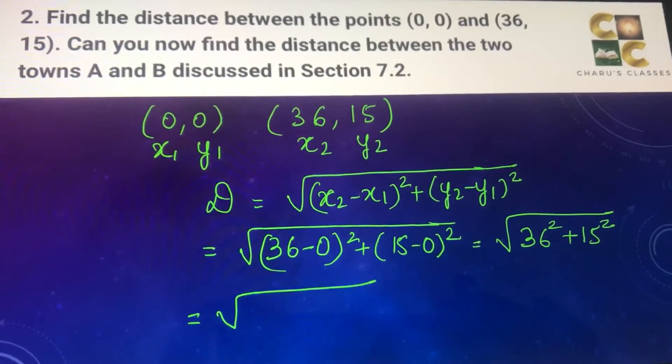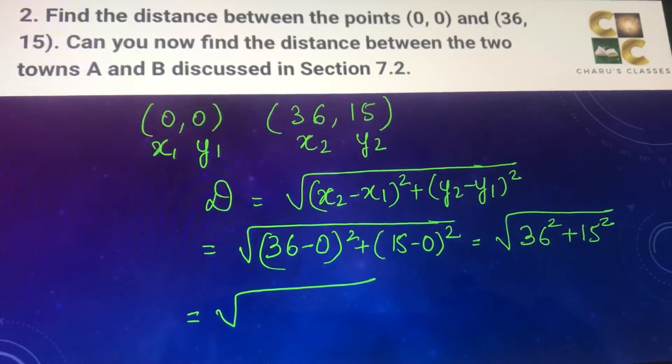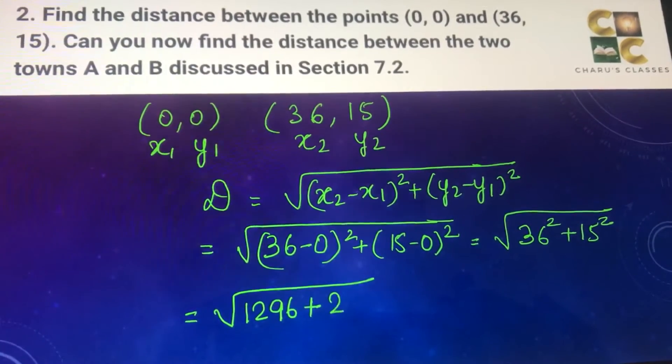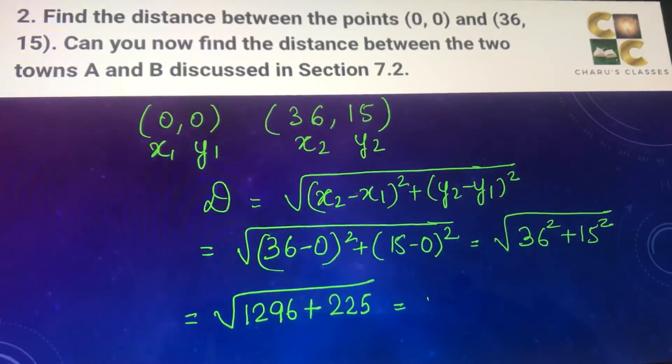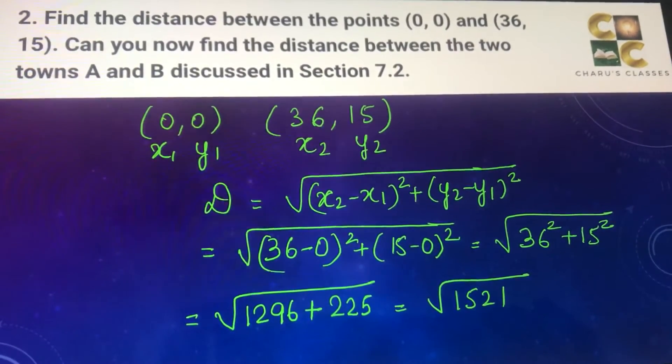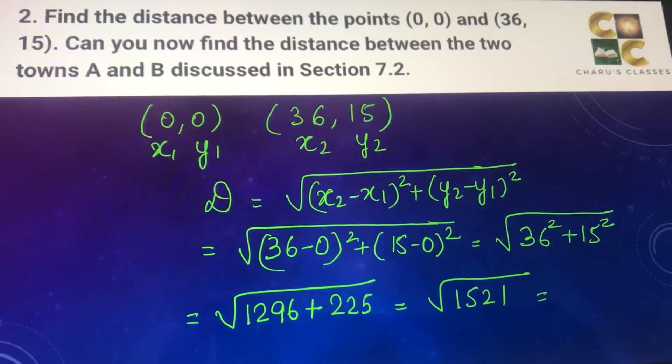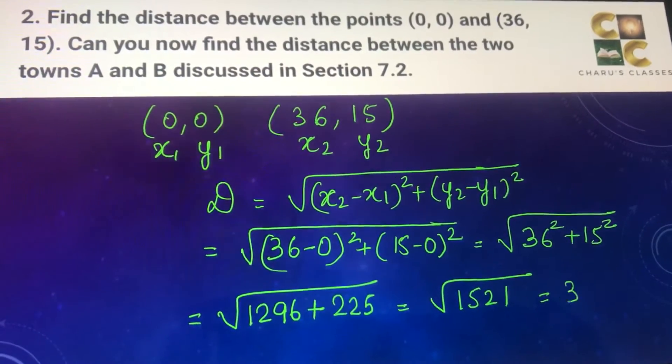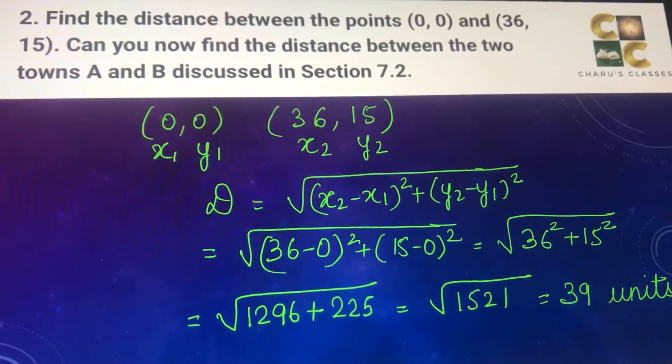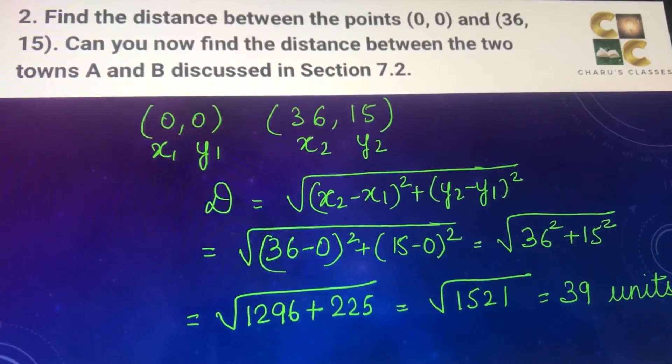36 squared, that is 36 into 36, is 1296 and 15 squared is 225. When we add them we get 1521, and if you take the square root of that it comes as 39 units. So this is the distance between the two points.